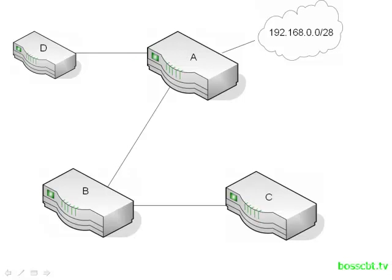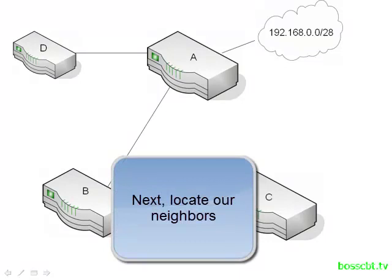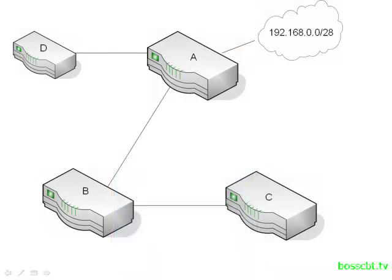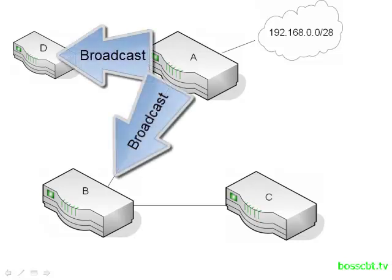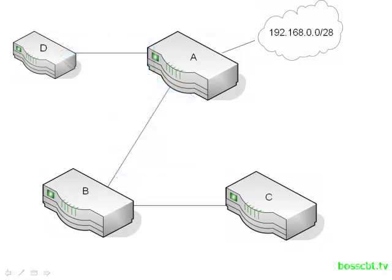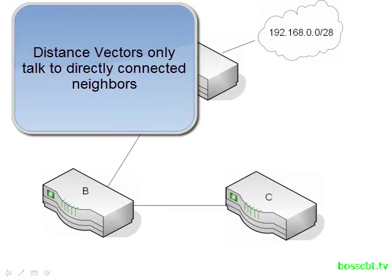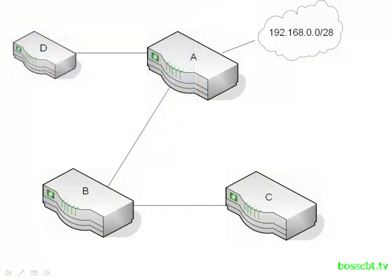Each router is going to populate its route table with what it already knows. Then, once it has information to share, it needs to find neighbors. A router running a distance vector will often find neighbors by issuing a broadcast message to contact all possible neighbors, and once neighbors are found, they begin exchanging route information. Importantly, a router running a distance vector will only talk to its directly connected neighbors. Routers A and C, since they're not directly connected, will not share information directly. Likewise, routers B and C cannot talk directly with router D — this is a key limitation of distance vectors.